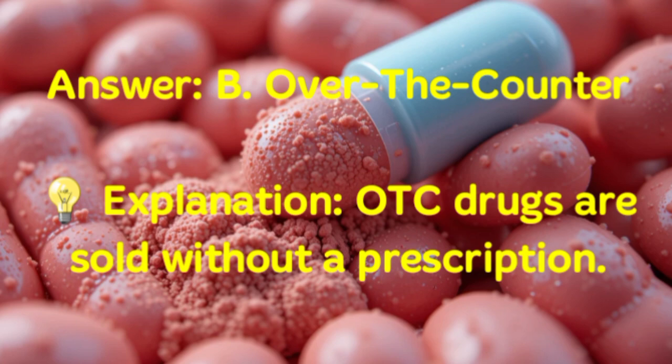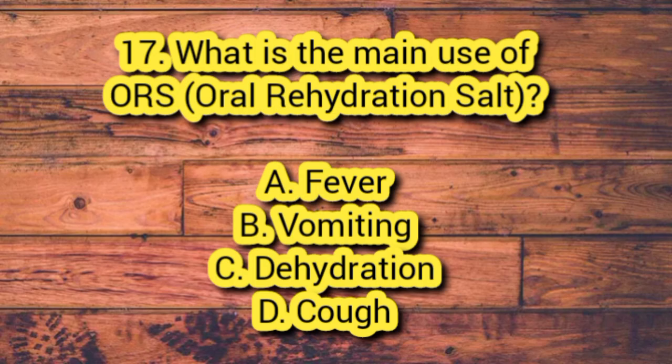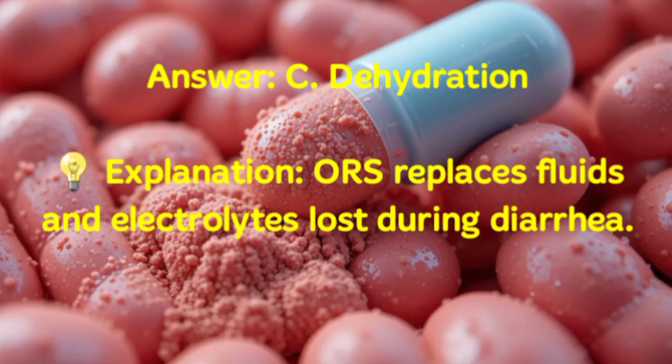Number 17. What is the main use of ORS (oral rehydration salt)? A. Fever. B. Vomiting. C. Dehydration. D. Cough. Answer: C. Dehydration. Explanation: ORS replaces fluids and electrolytes lost during diarrhea.